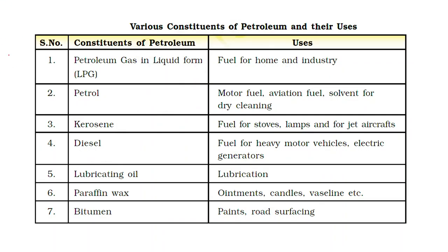This table shows the various constituents or fractions of petroleum: Petroleum gas in liquid form is called LPG (Liquefied Petroleum Gas), used as fuel at home and in industry. Petrol is used as motor fuel, aviation fuel, and solvent for dry cleaning. Kerosene is used as fuel for stoves, lamps, and jet aircraft. Diesel is fuel for heavy motor vehicles and electric generators. Lubricating oil is used for lubrication to reduce friction. Paraffin wax is used in ointments, candles, and Vaseline. Bitumen is used for road surfacing.